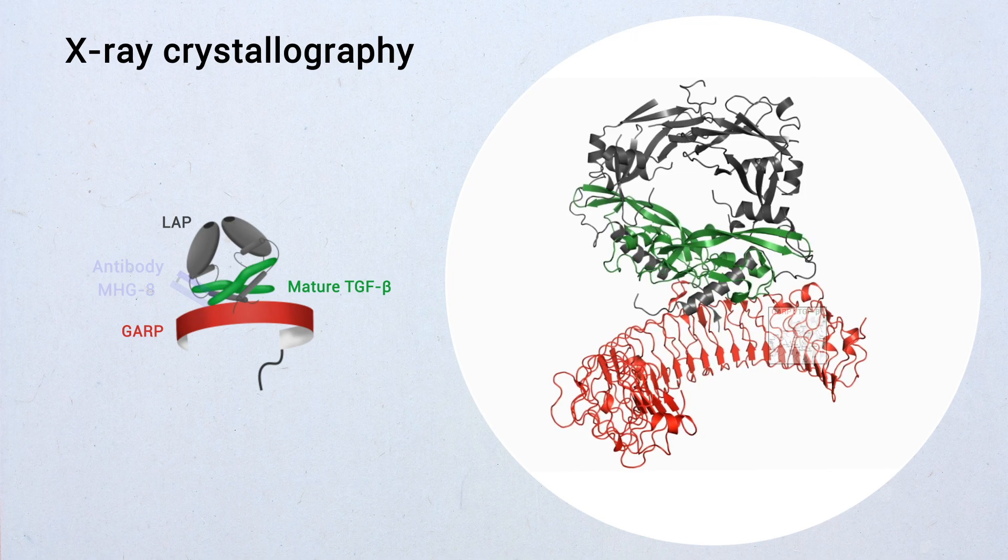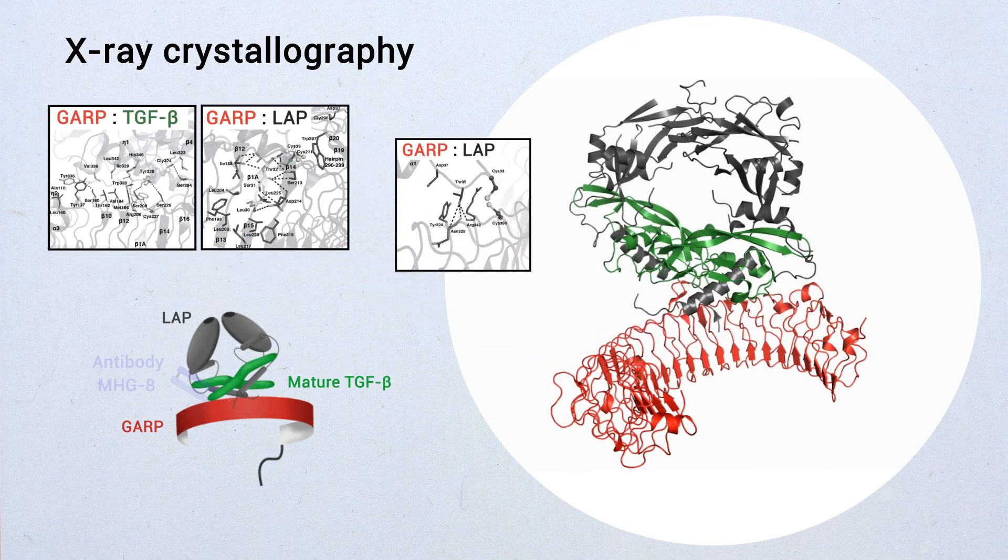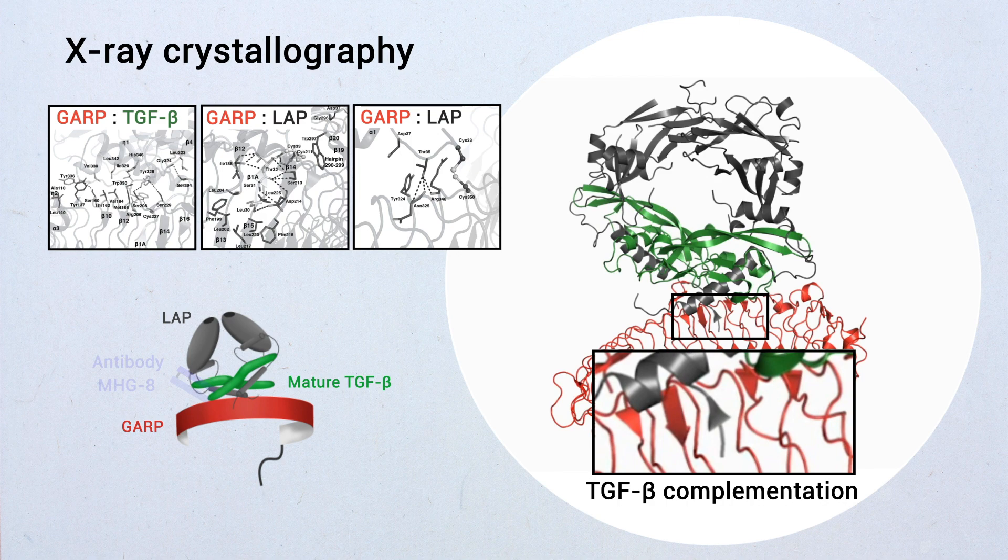GARP exploits an unusual medley of interactions, including fold complementation by the N-terminus of TGF-beta to chaperone and orient the cytokine for activation by alpha-v-beta-8.